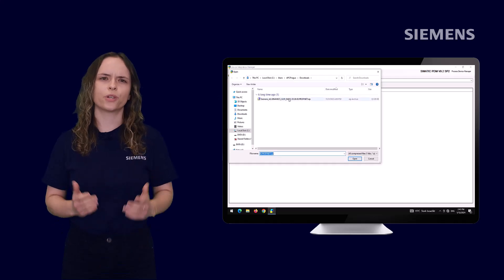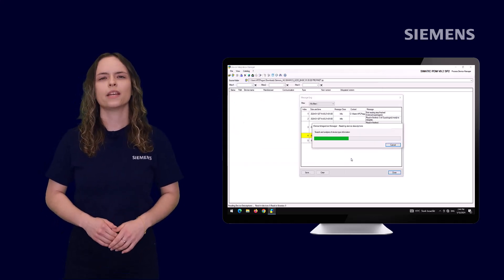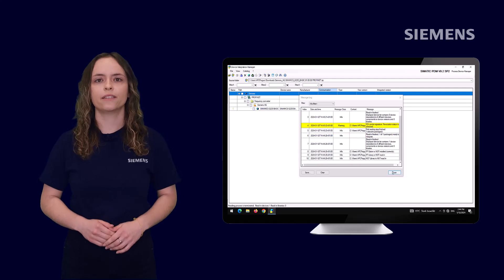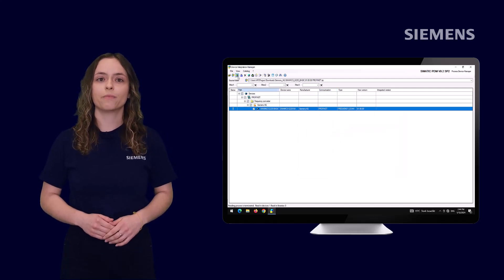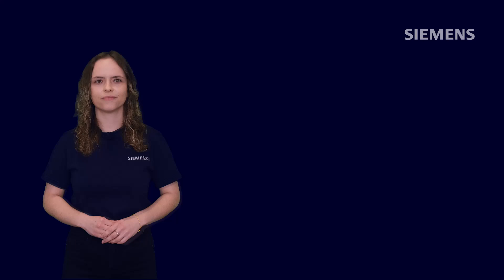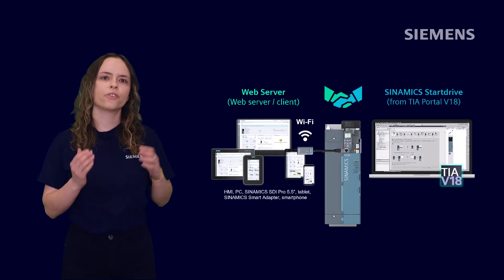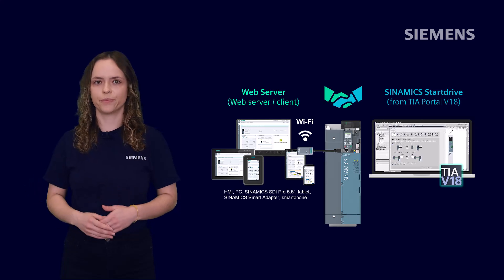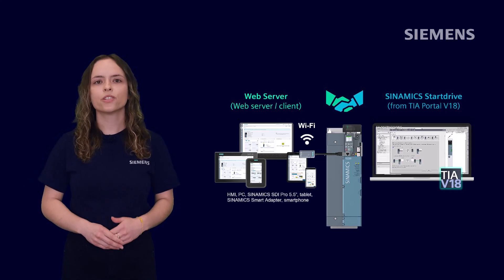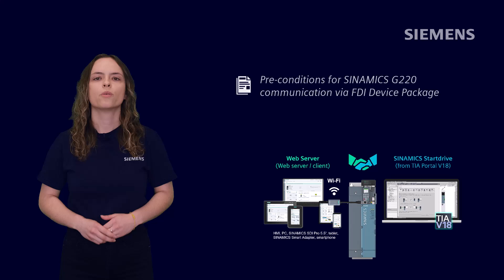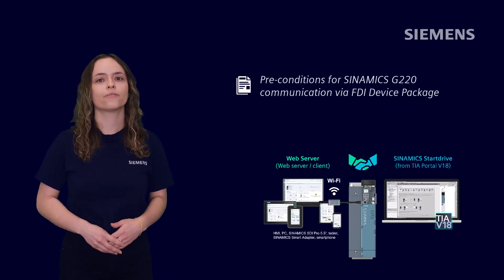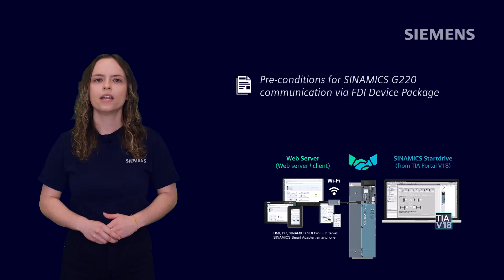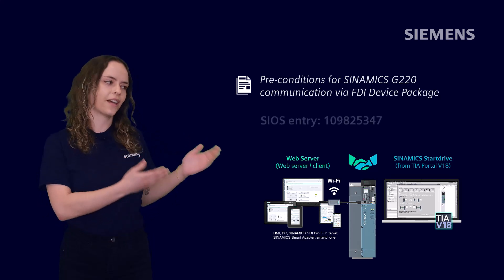For integration of the Sinamics G220 into PDM, it is necessary to get the FDI device package, which is provided by Siemens for free. The initial commissioning of the Sinamics G220 drive is done via standard commissioning tools, either via the integrated web server or Startdrive in the TIA portal. For the initial setup, please use the guide 'Three conditions for Sinamics G220 communication via FDI device package,' which can be found on this SIOS entry.